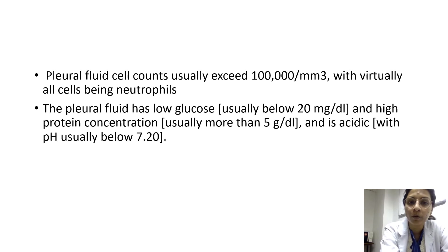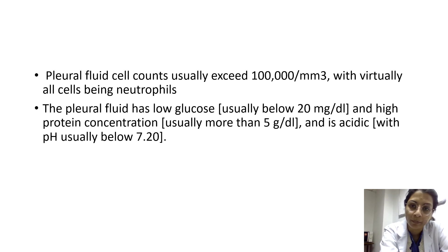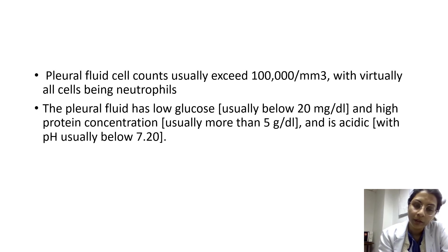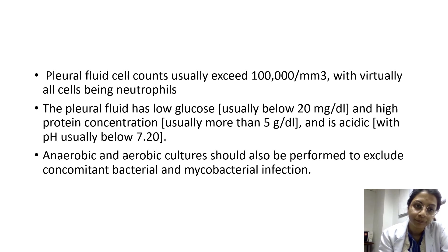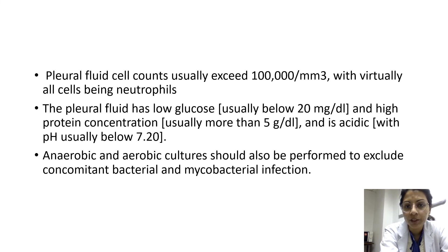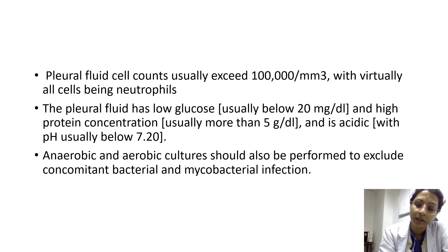The pleural fluid glucose is usually low — as low as 20 mg/dL — with high protein concentration exceeding 5 g/dL, and is acidic with pH usually less than 7.2. Anaerobic and aerobic cultures should also be performed to exclude concomitant bacterial and mycobacterial infection.